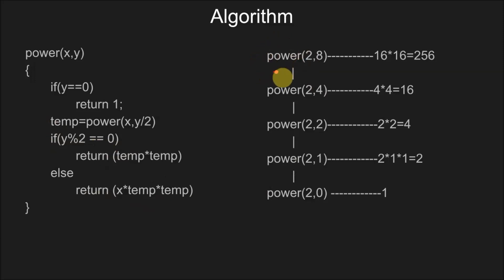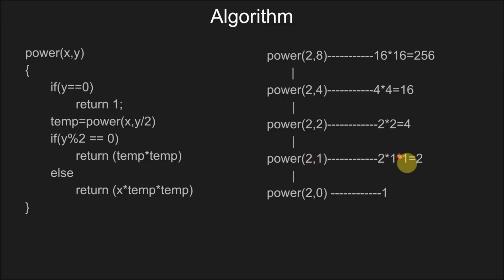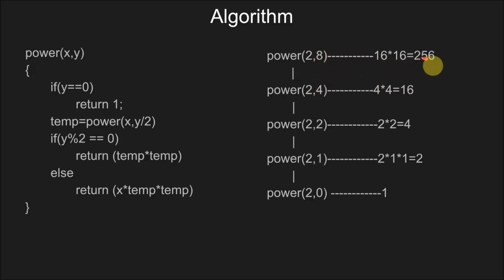For example, if we call power(2, 8), it calls power(2, 4), which calls power(2, 2), which calls power(2, 1), which calls power(2, 0) — the base case returning 1. Since 1 is odd, 2 * 1 * 1 = 2 is returned. Since y=2 is even, 2 * 2 = 4 is returned. Since y=4 is even, 4 * 4 = 16 is returned. Since y=8 is even, 16 * 16 = 256, which is the final answer.